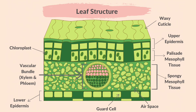This is the cross-section of a leaf, and these are the parts that you will be expected to identify in the leaf of a dicotyledonous plant. At the top we have the waxy cuticle and the upper epidermis. Then it's the palisade mesophyll tissue which contains chloroplasts. Then we have the spongy mesophyll tissue which contains air spaces. At the bottom you may see guard cells and stomata, and then the lower epidermis. We also have the vascular bundles which contain xylem and phloem.